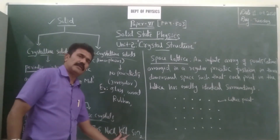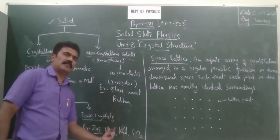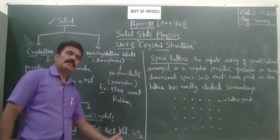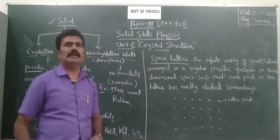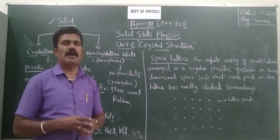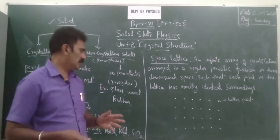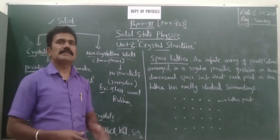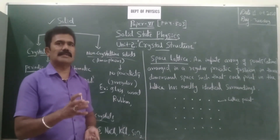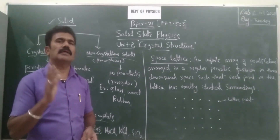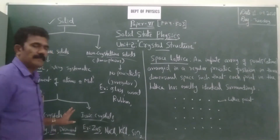Potassium chloride is similar in structural form to sodium chloride, but with different ions. Gold, silver, and copper are considered atomic crystals. That is the difference between atomic crystals and ionic crystals.